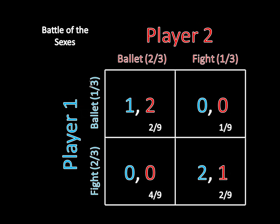For the outcome where player one goes to the ballet and player two goes to the fight, that's one-third times one-third, giving one-ninth. For the outcome where player one chooses fight with probability two-thirds and player two chooses ballet with probability two-thirds, you reach that outcome with probability four-ninths. And lastly, both players going to the fight is two-thirds times one-third, giving two-ninths. Always double-check: these probabilities must sum to one. Two-ninths plus one-ninth plus four-ninths plus two-ninths equals nine-ninths, which is one — so we're good.